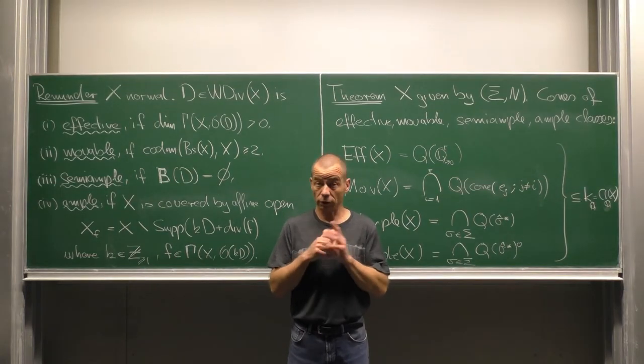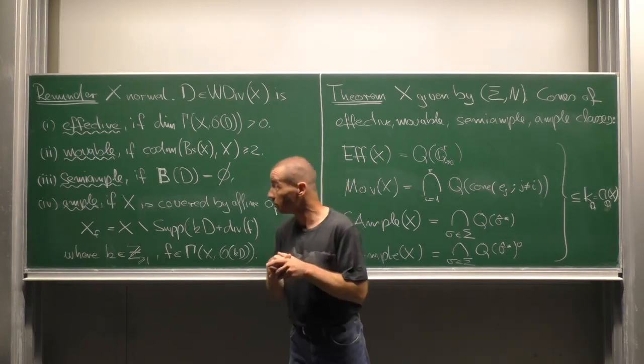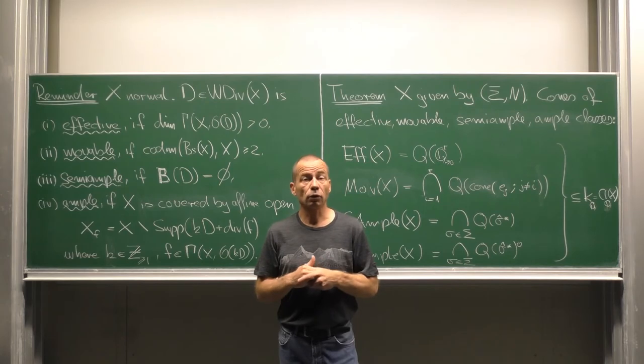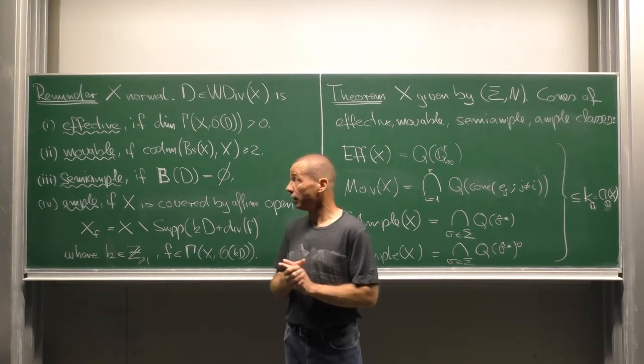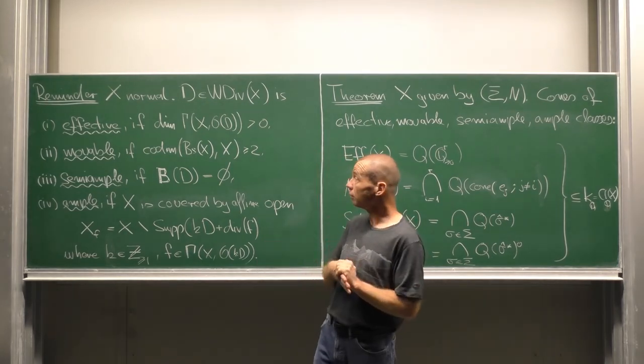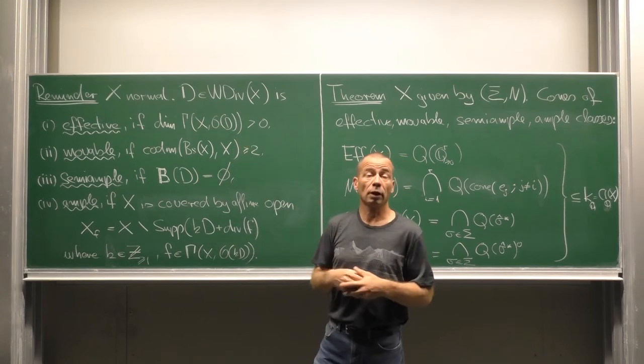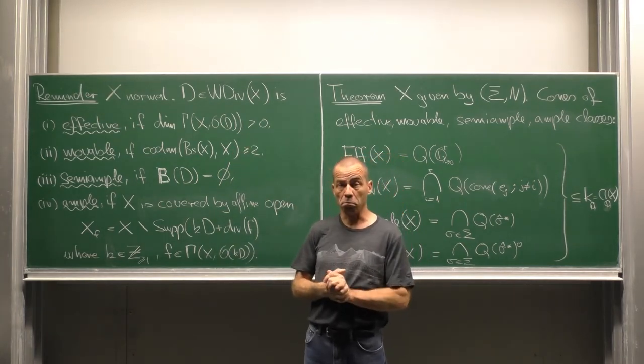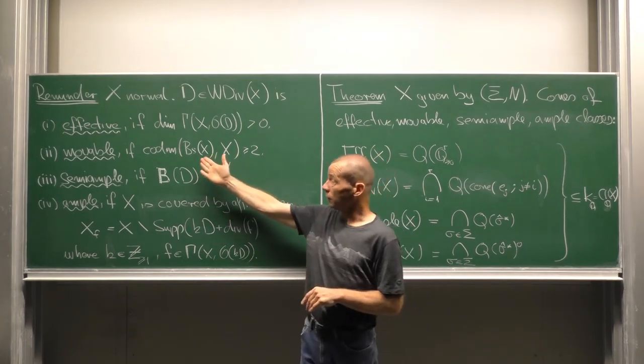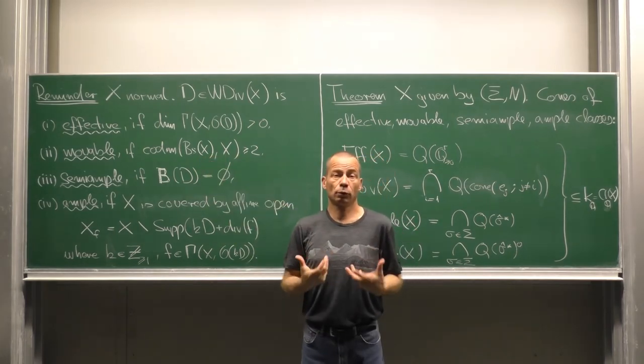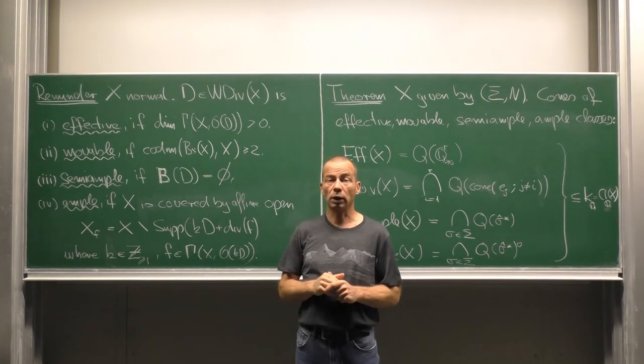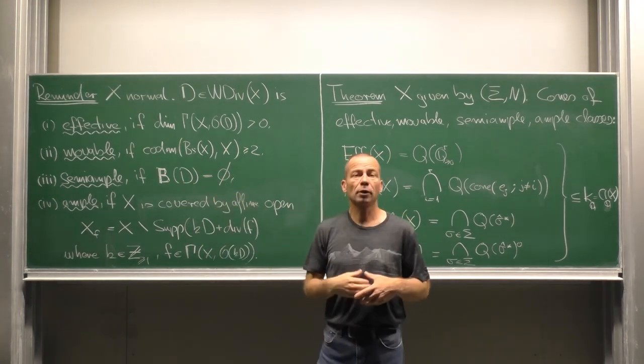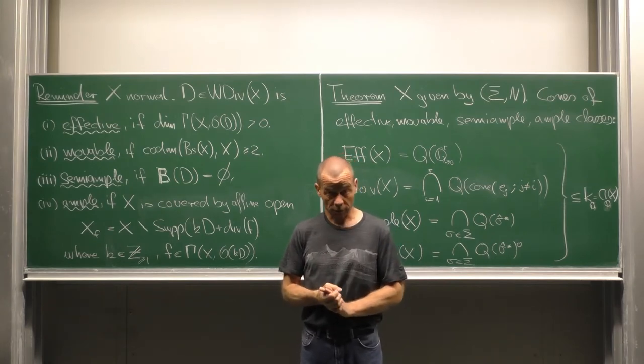We turn to the various types of divisors. Recall that the divisor D on a normal variety x is effective if it admits non-zero sections. D is called movable if its base locus is of co-dimension at least 2 in x.